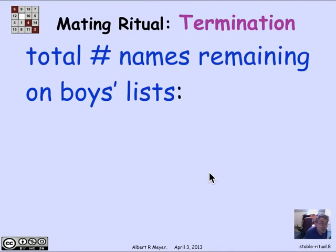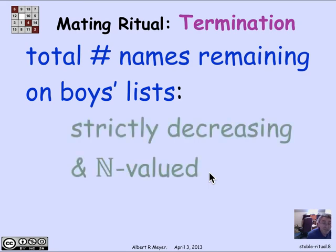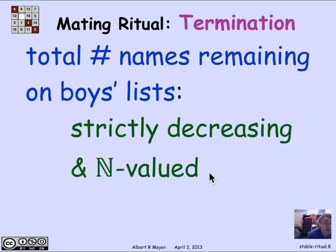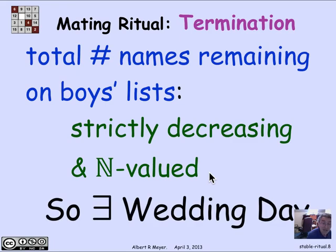Termination is easy. Because if you look at the state — the boys' lists on a given morning — things evolve because boys get rejected and they cross girls off the list. So the total number of names remaining on the boys' lists on any given morning is a strictly decreasing and non-negative integer-valued variable. So by the well-ordering principle, that strictly decreasing well-ordered derived variable will reach a minimum value. And by definition, that's when the algorithm has to stop. So there's a wedding day.